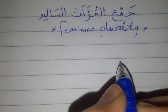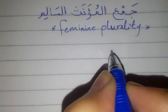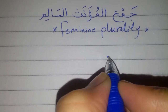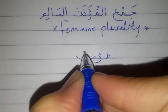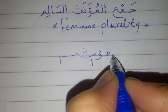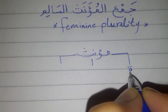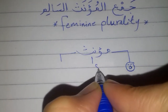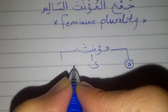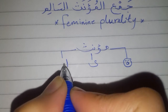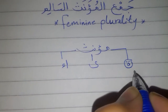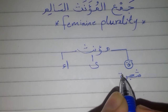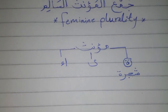Before we start, let's recap how to tell that a noun is feminine, or mu'annas. We'll notice that the noun ends in ta' al-marboota, the closed ta', or al-alif al-maqsura, which is written like this, or it ends with alif hamza. For example, shajara — this word is mu'annas or feminine because it ends in ta' marboota.